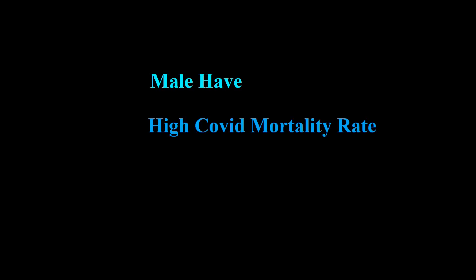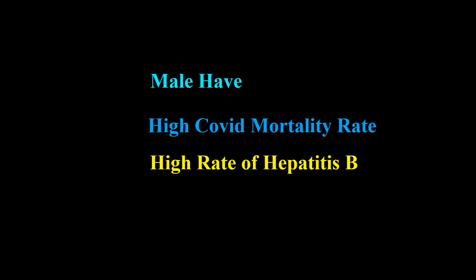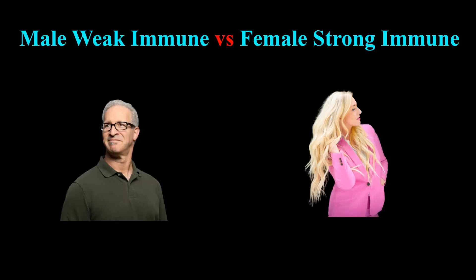Hello guys, welcome to another short lecture. In males, the mortality rate is high, hepatitis B infection rate is high, HIV rate is high. Why is there a difference in the rate of disease? This is because of some fundamental differences found in the physiological immune responses between males and females.